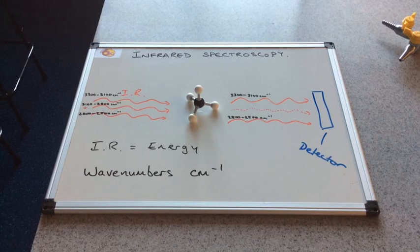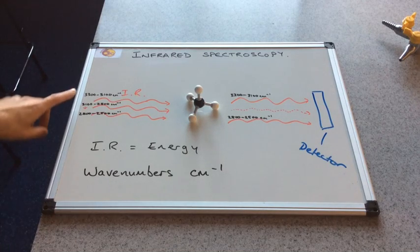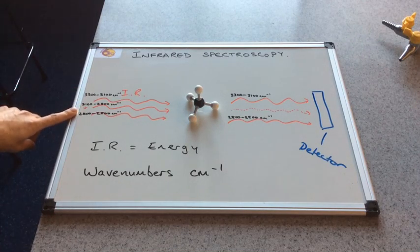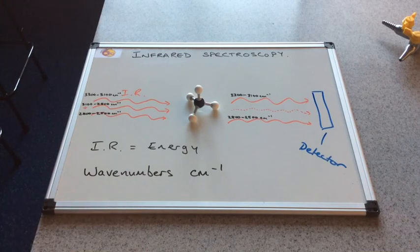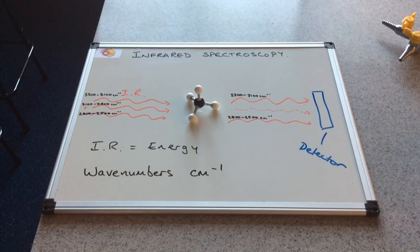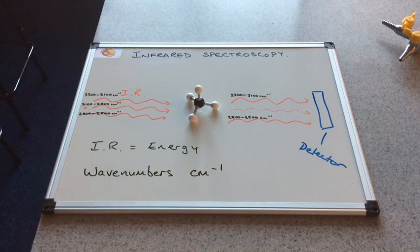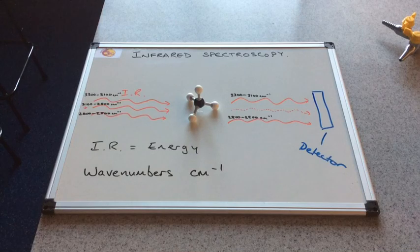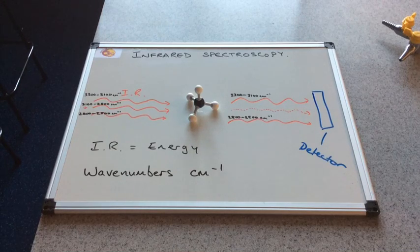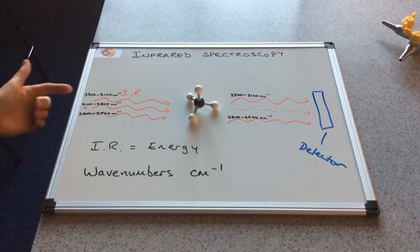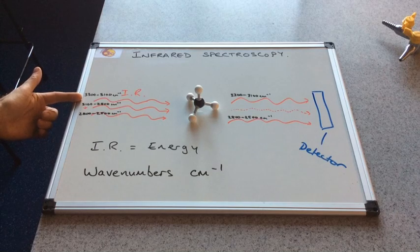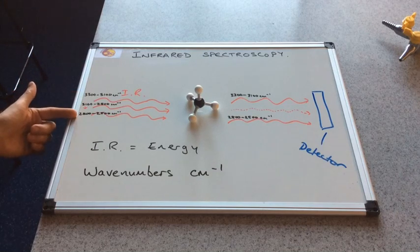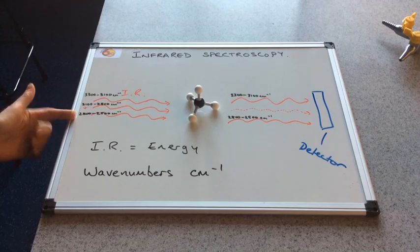So as I've already said, the frequency of infrared is measured in what we call wave numbers. And the units of wave numbers are centimeters to the minus one. So essentially, this tells us how many waves there are per centimeter. So 3300 waves per centimeter, 2800 waves per centimeter.